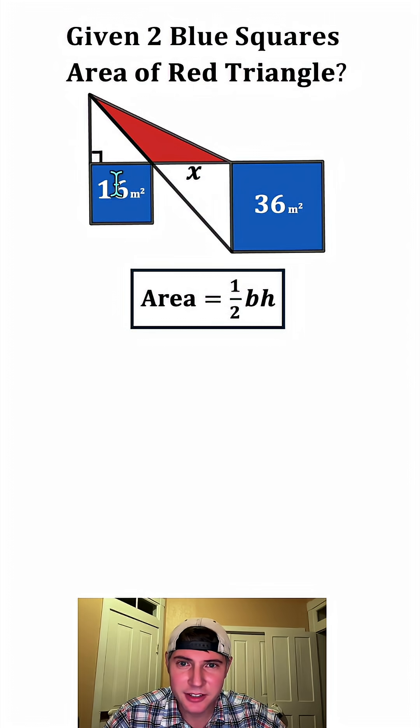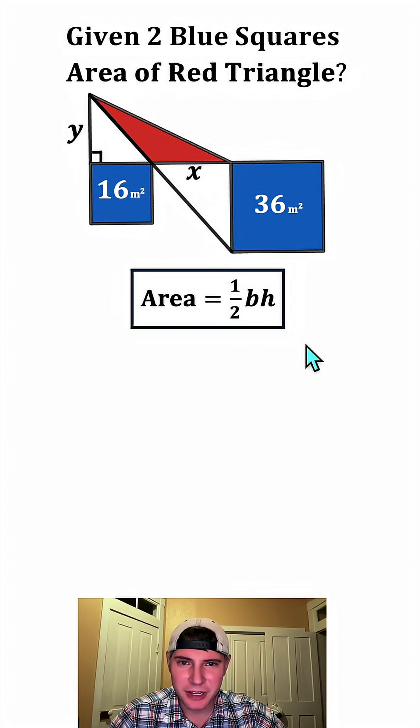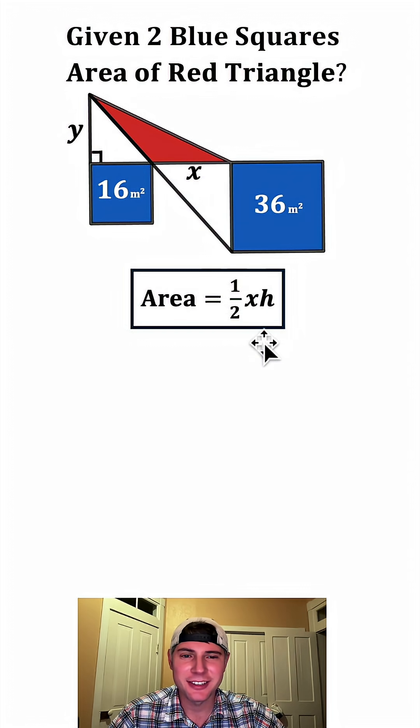This right here would be at right angles, because this is a square, so this is also at right angles. This right here will be the height of our triangle. We don't know that either, so let's call it y. So now let's update this formula. The base of our triangle is x, and the height is y.